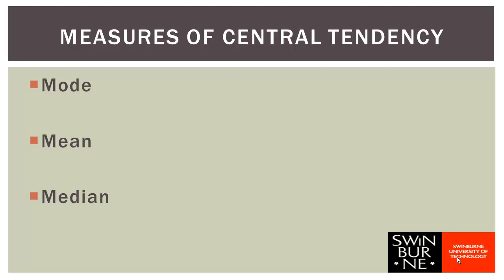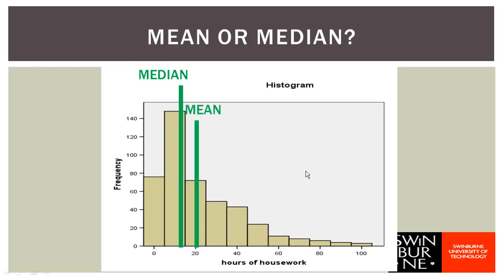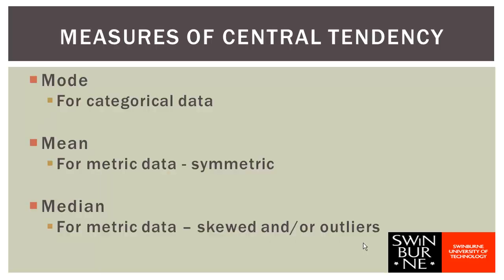For metric data you should be using either the mean or the median, and which you use depends on the shape of the distribution. Looking at the distribution of hours of housework, the median is a much better indication of what was typical, because the mean is being unduly influenced by a few people with extremely long times spent on housework. So if your distribution is skewed, the median will give you a much better representation of what's typical. If the distribution is symmetric, you would use the mean. For categorical data use the mode; for metric data use the mean if symmetric, or the median if skewed or if there are outliers.